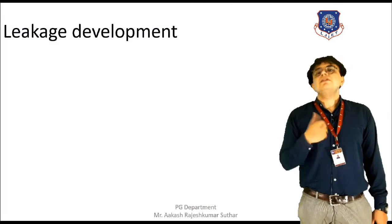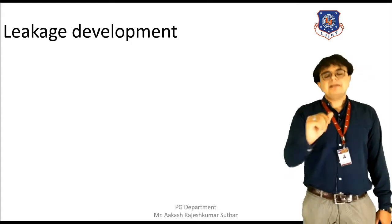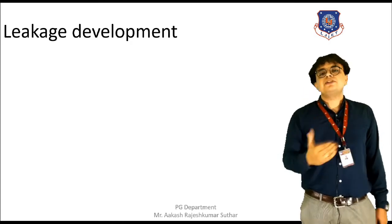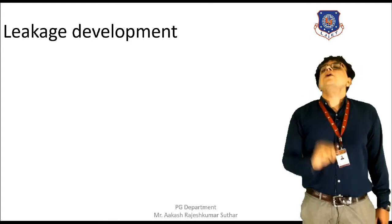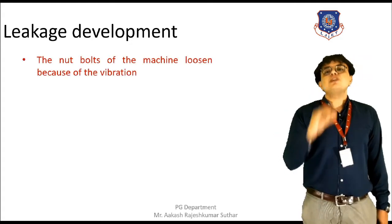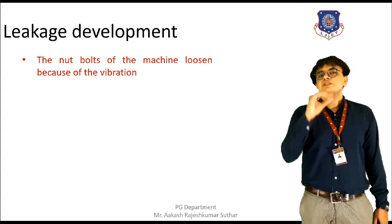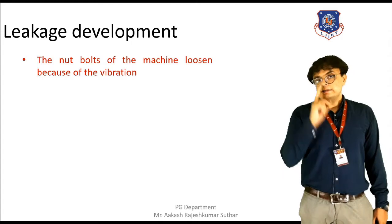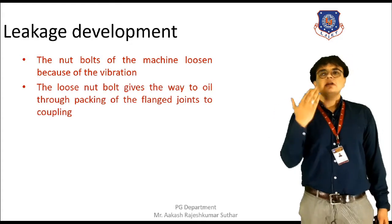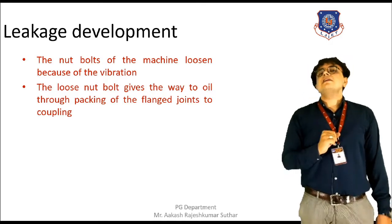Leakage development. We all know that machines are joined with the help of bolts and nuts. But with more working, there will be more vibration, and because of this vibration, loosening of the bolts and nuts will be found. Because of this vibration, the joints will get loosened, the nuts and bolts have got loosened, and as a result, the packing found at the flange joint will be loosened. Oil will come out from that joint and spread all over the machine. This is how leakage will occur.